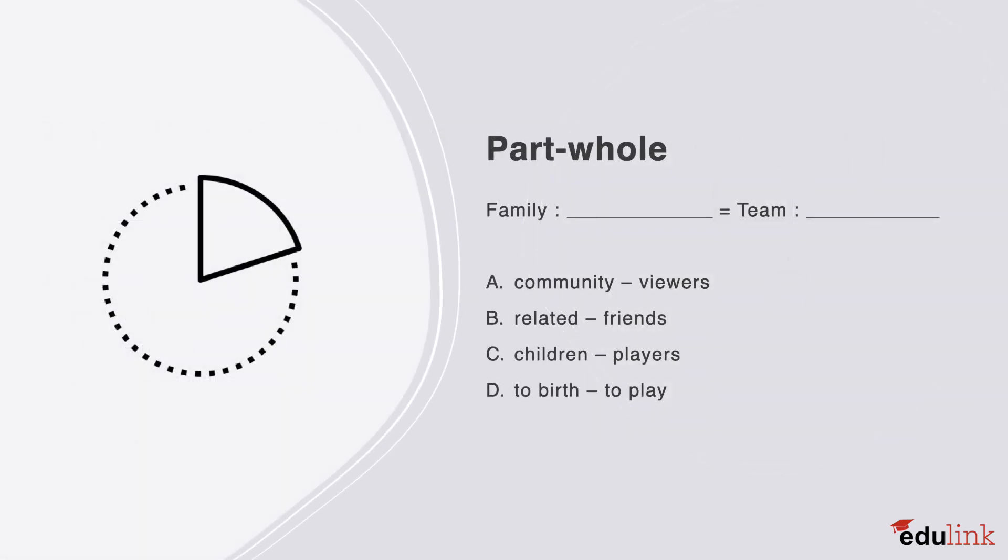The next question is on part-whole relations. You have time now to select the correct answer. The answer here is C. A family is a whole unit comprised of children as parts, and a team is a whole unit comprised of players.